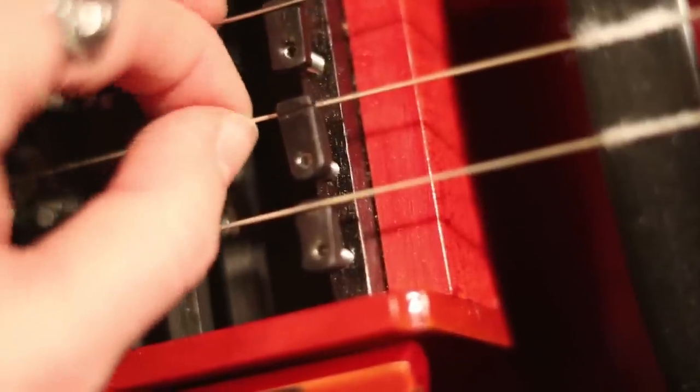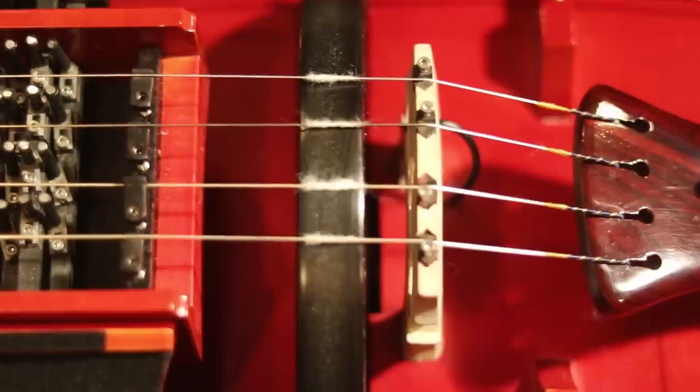Then we have the little string grips, where you keep the melody strings that you don't use. And here's the wheel and the bridge. Now here is the heart of the hurdy-gurdy. The wheel is your bow.